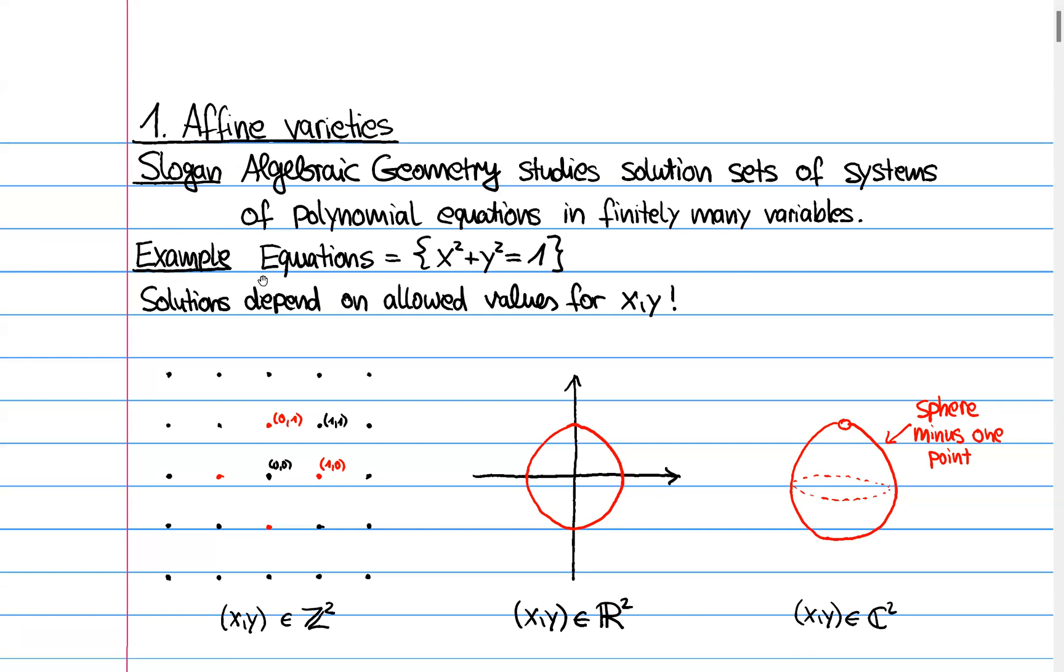And to give an example, we can look at the solution set of a system which is one equation, but in two variables. And this is the good old equation x squared plus y squared equals one. And the first observation I want to talk about is that the solution set really depends on what values we allow for these variables.